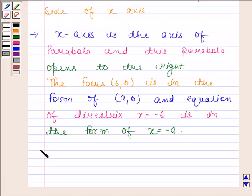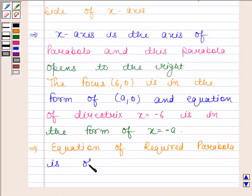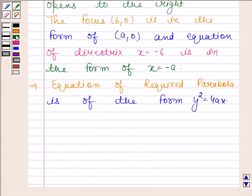So this implies that equation of required parabola is of the form y squared equals to 4ax. Here a is equal to 6.